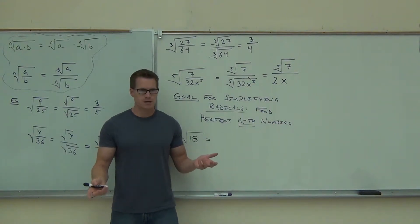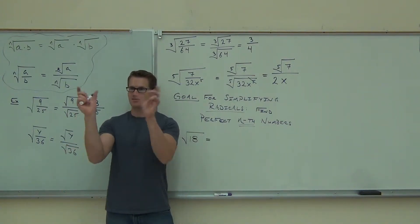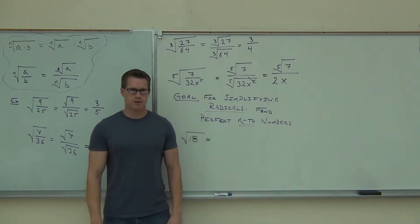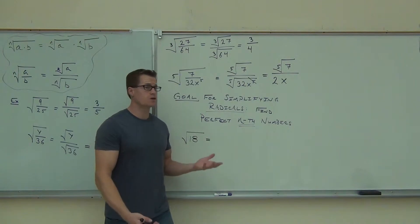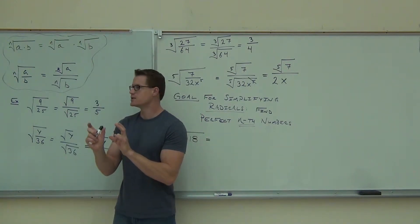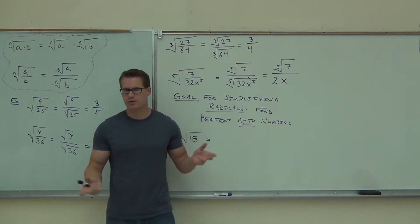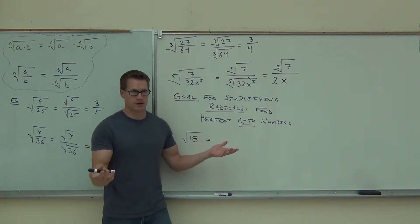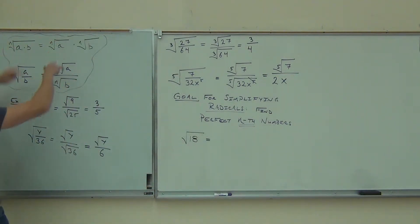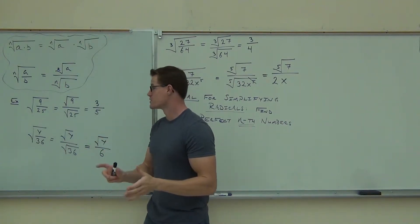Do I want 6 and 3? Why wouldn't 6 and 3 work? A lot of people say just find two numbers and multiply. Can you take the square root of 6? Can you take the square root of 3? Then why would you use those numbers? What we're doing is using numbers where you can take the square root of at least one of them — but probably only one. Otherwise you could just take the square root of the original number.